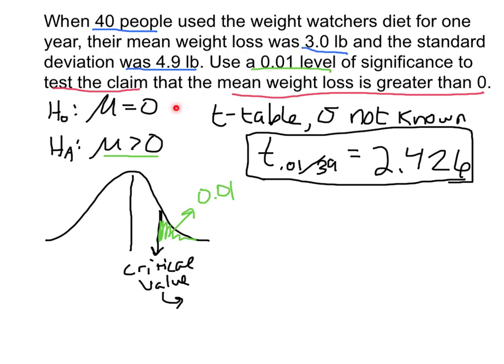If we're assuming the null to be true, then how unlikely is it that 40 people had a weight loss of 3 with a standard deviation of 4.9, given that we're assuming 0 was the population mean? What's the probability of this occurring given that the mean was 0? If the p-value is very small, then we're going to reject. We can look at it via the critical value or via the p-value.